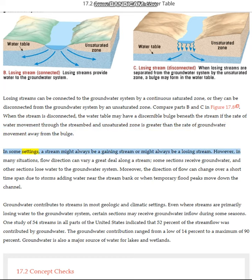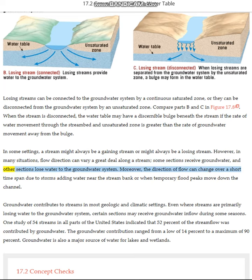In some settings, a stream might always be a gaining stream or might always be a losing stream. However, in many situations, flow direction can vary a great deal along a stream — some sections receive groundwater and other sections lose water to the groundwater system. Moreover, the direction of flow can change over a short time span due to storms adding water near the stream bank or when temporary flood peaks move down the channel.